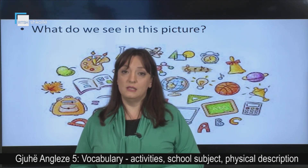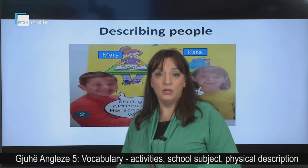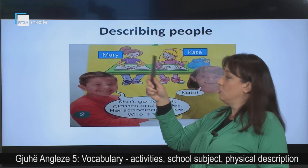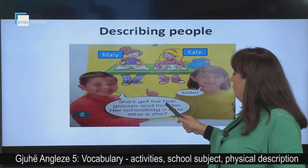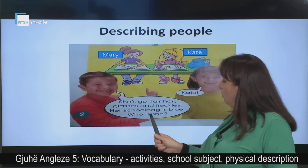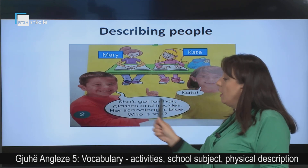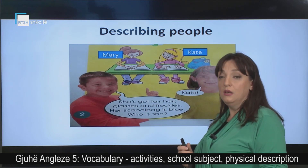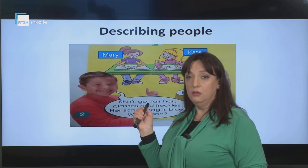Here we revise the school subjects again. All you have to do is read, memorize, and practice the school subjects, especially your favorites. And here we have another topic — let's go on: describing people. We have Mary and Kate. Look at the picture. The boy is describing and says: she has got fair hair, glasses, and freckles. Her school bag is blue. Who is she? Of course, we are talking about Kate. So this is how we describe people. You are going to practice again how to describe your family members, your friend, yourself.